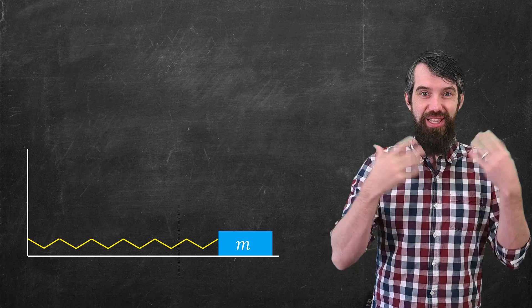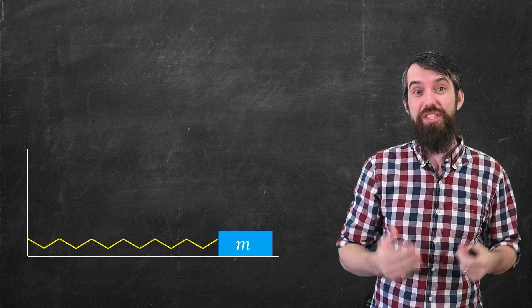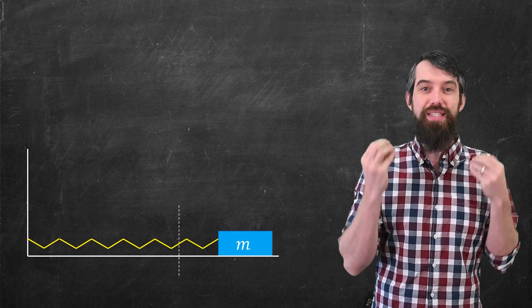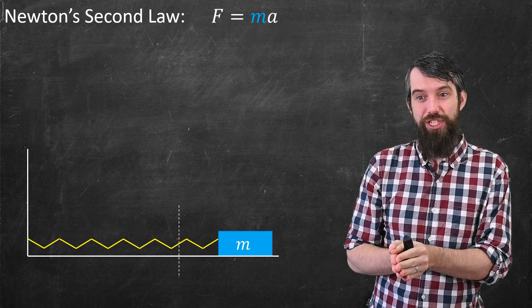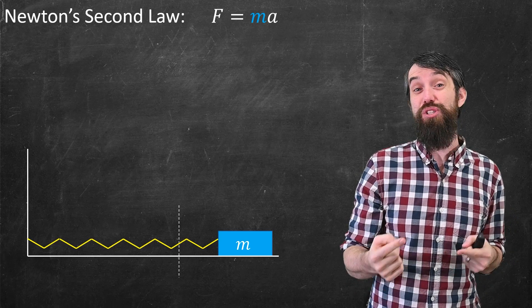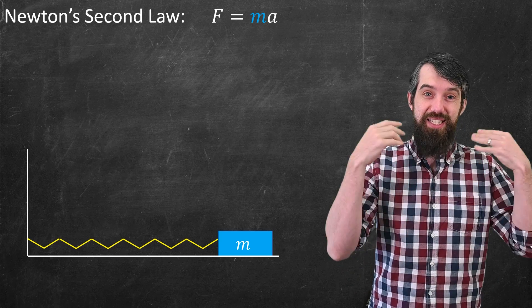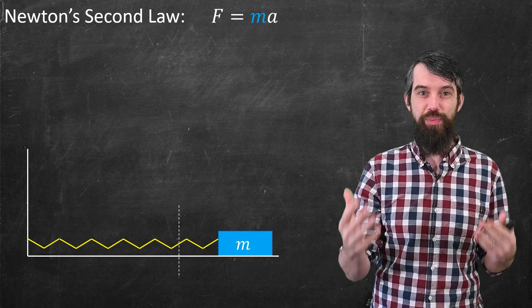So we're going to begin with just a little bit of analysis of the forces that are involved, because we have Newton's second law that tells us that the sum of the forces is equal to the mass times the acceleration. And it's going to be convenient for us to write acceleration as just the second derivative of the displacement x.